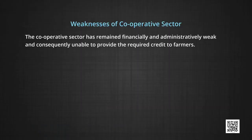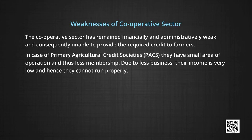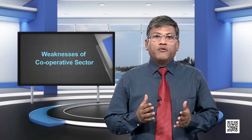Funding of special programs meant for the upliftment of rural areas is also provided by the cooperative sector. However, the cooperative sector has remained financially and administratively weak and consequently unable to provide the required credit to farmers. Primary agricultural credit societies (PACS) have small areas of operation and thus less membership. Due to less business, their income is very low and hence they cannot run properly. Serious regional imbalances are observed in their growth — out of total loans, 70 percent is accounted for by only eight states. Most major drawbacks lie in the recovery of loans, with loan overdues continuously increasing. They also suffer from organizational and managerial inefficiency.